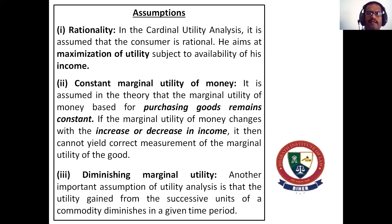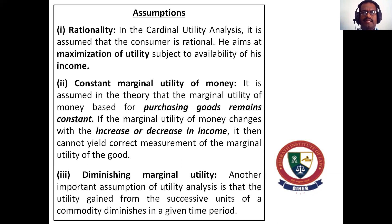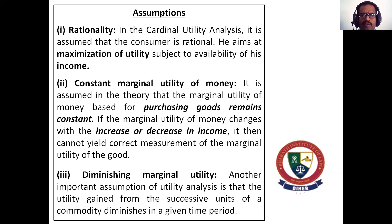Assumptions — Number one: Rationality. In the cardinal utility analysis, it is assumed that the consumer is rational and aims at the maximization of utility, subject to the availability of his income. Income plays a vital role in maximizing utility, as it creates both demand and supply of the product. The consumer wants to purchase the commodity with the help of income.